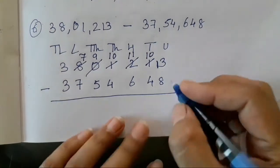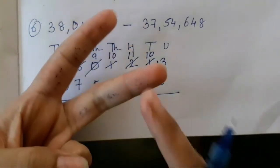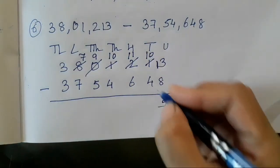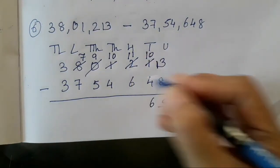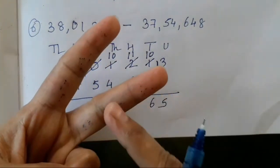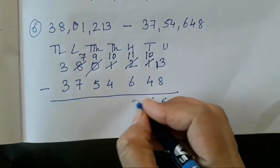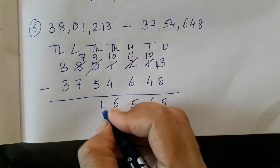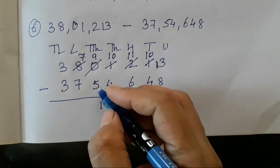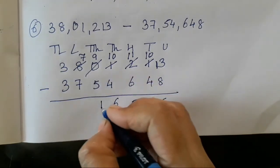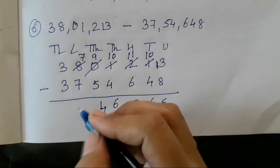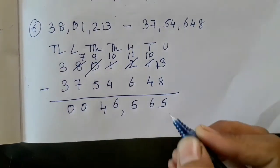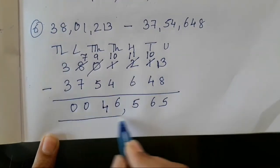Now let's subtract. Count after 8: 9, 10, 11, 12, 13 — so 5. 10 minus 4 is 6. Count 6, 7, 8, 9, 10, 11 — so 5. 10 minus 4 is 6. 9 minus 5 is 4. 7 minus 7 is 0. 3 minus 3 is 0. So the answer is 46,565.